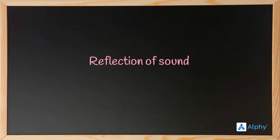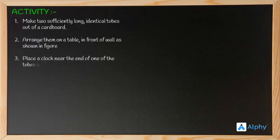Reflection of sound. Activity: make two sufficiently long, identical tubes out of cardboard. Arrange them on a table in front of a wall as shown in the figure.